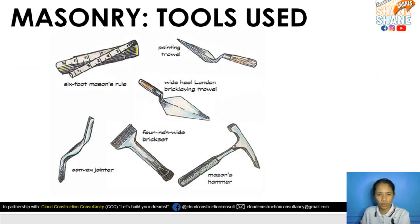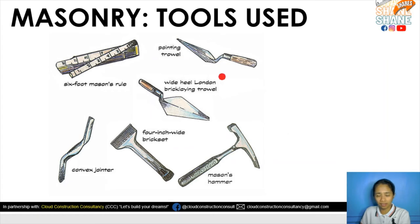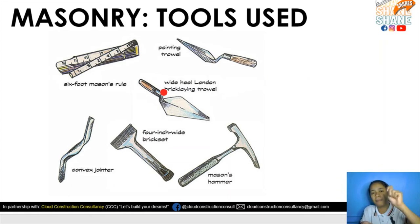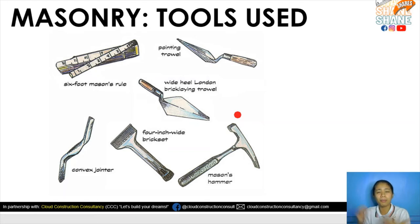What are the tools used? We have the six-foot mason's rule, used for alignment and as a straight edge. There is also the leveling rod. Then we have the trowel — the pizza-shaped tool used for applying cement mortar on hollow blocks. There is also the wide bricklaying trowel. Construction workers note that the larger the trowel, the more area it covers, though it is heavier since it is made of steel or aluminum.